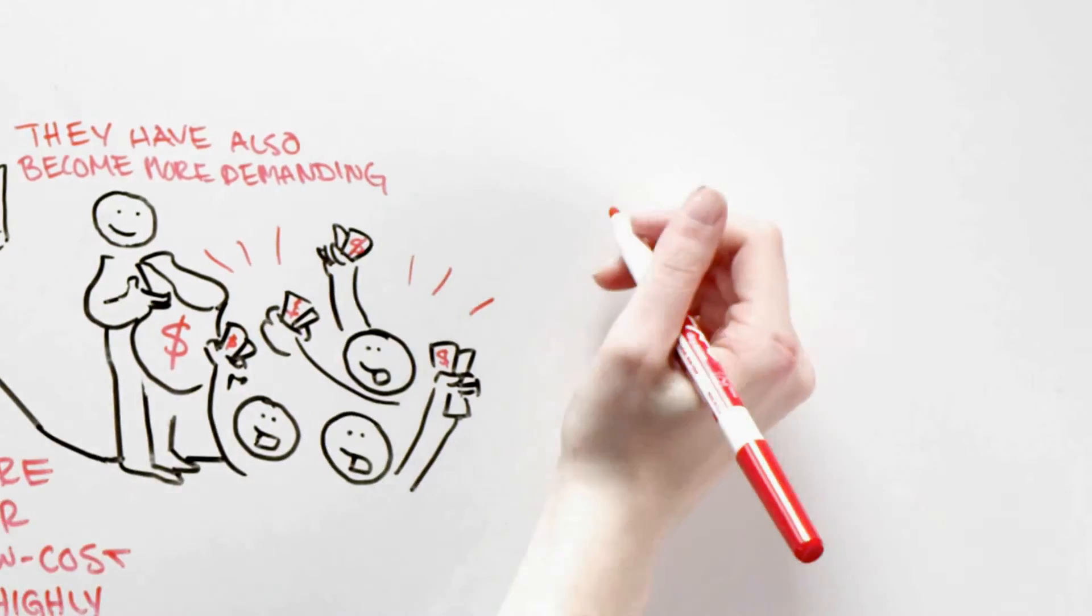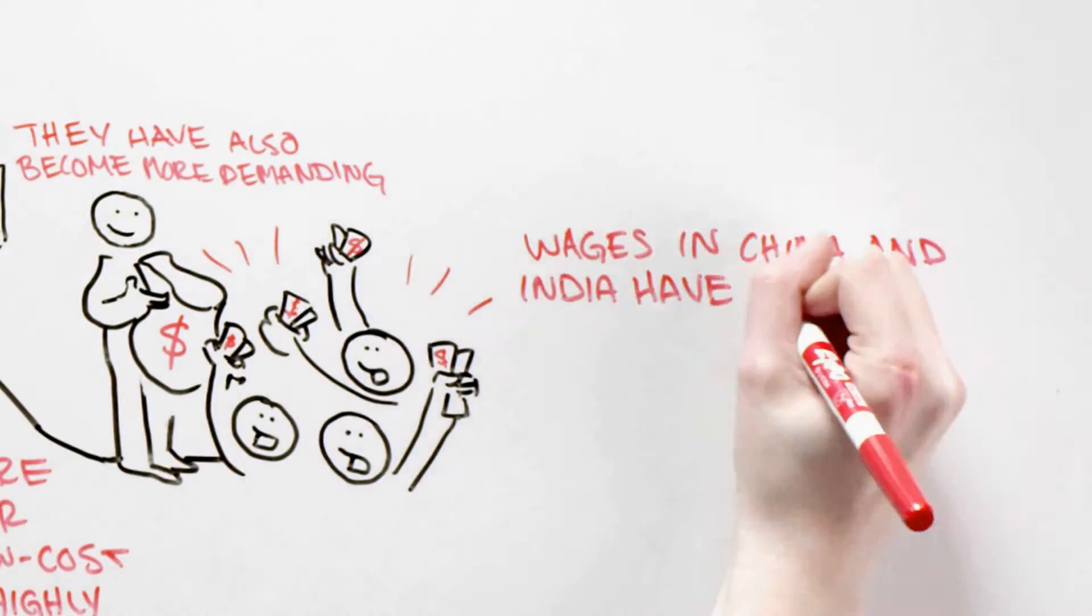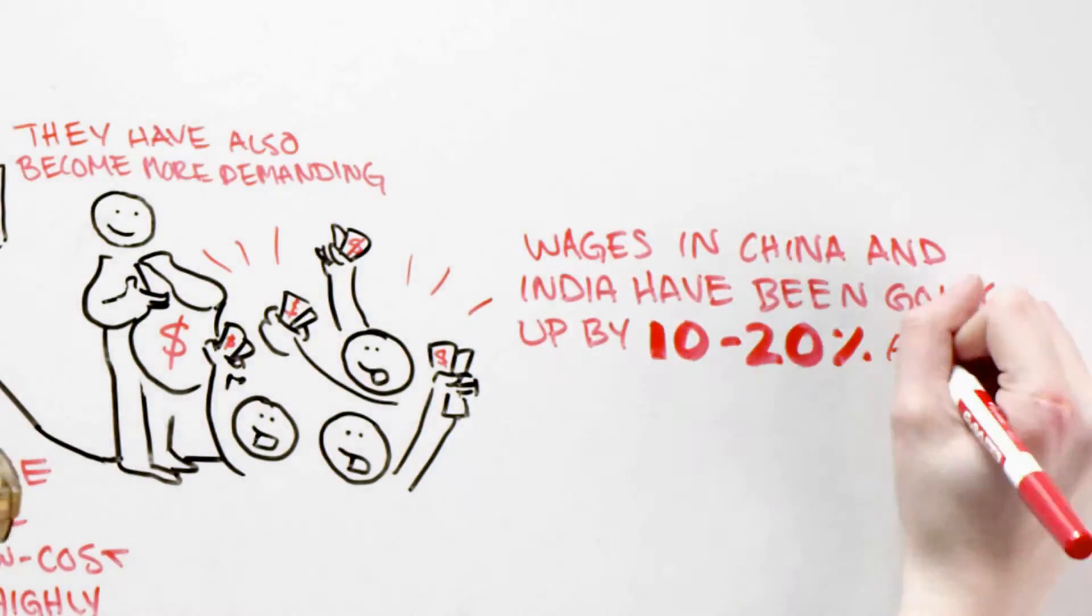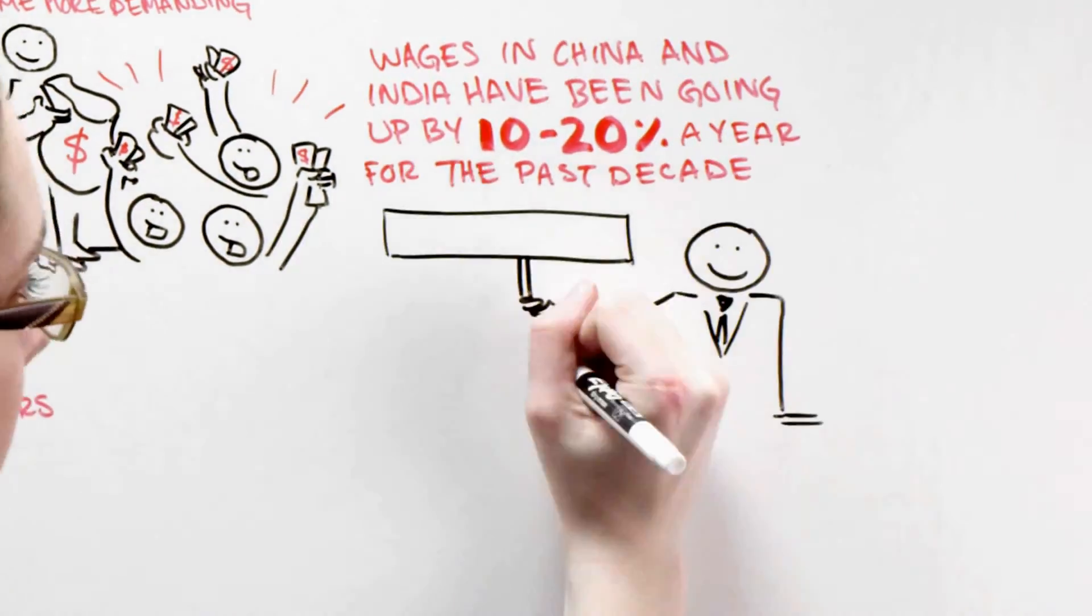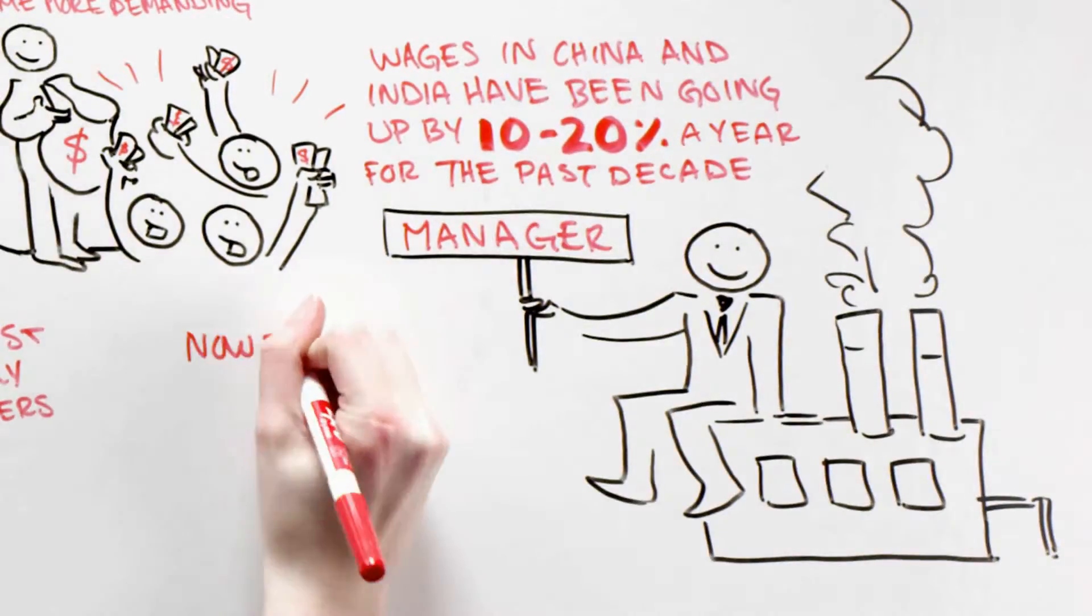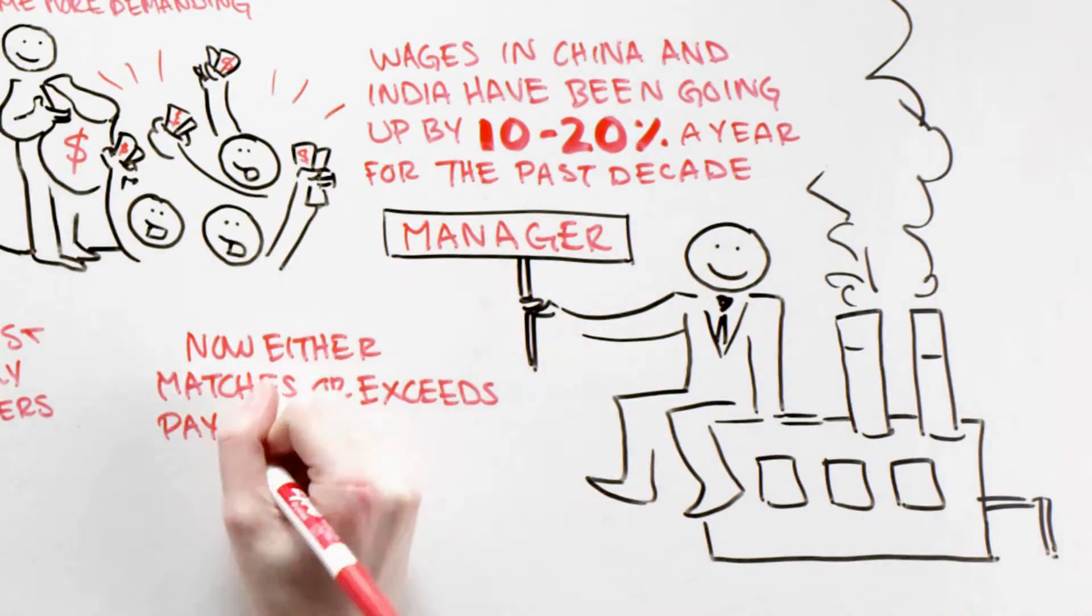The Economist noted, wages in India and China have been going up by 10-20% a year for the past decade, and compensation for senior Chinese managers now either matches or exceeds pay in America and Europe.